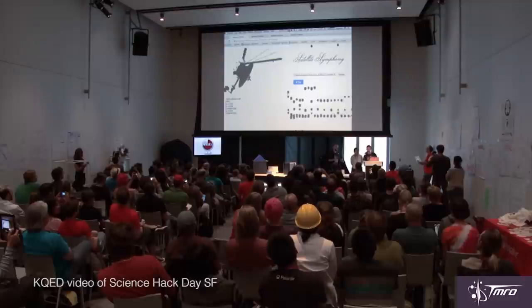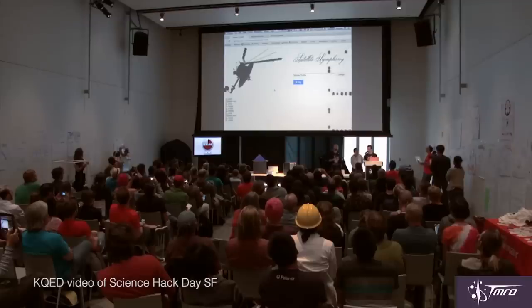This demo is from the Cal Academy of Sciences, and there's another one from Moscow, Russia. Symphony of Satellites was created by a couple of developers and a neuroscientist at a Science Hack Day in San Francisco. They utilized data from NORAD via a tool called CelestTrack in order to get all the data from the satellites.